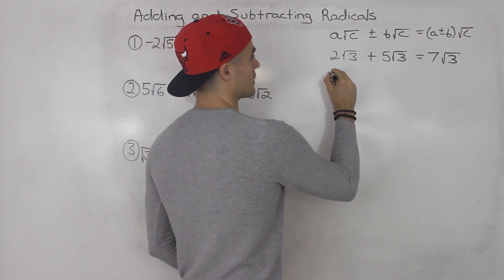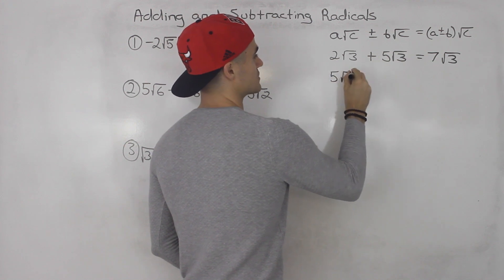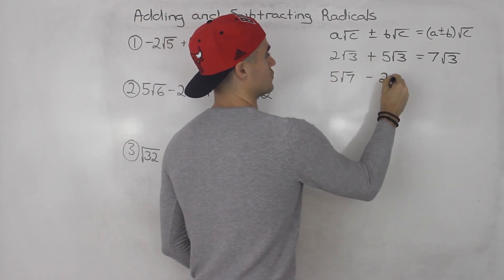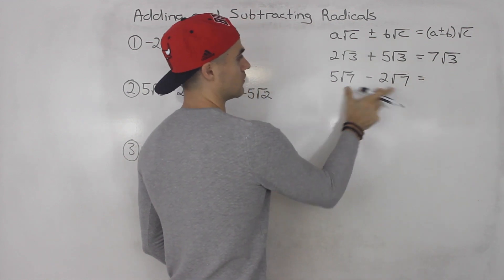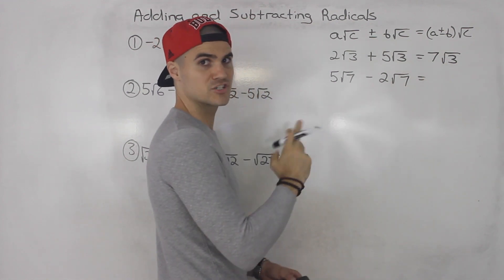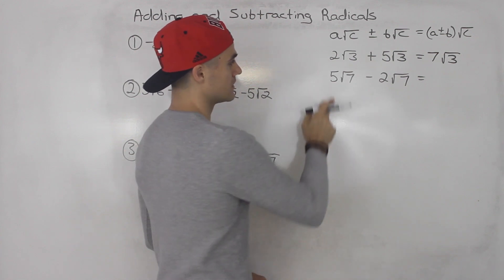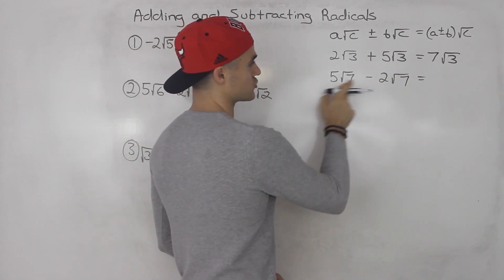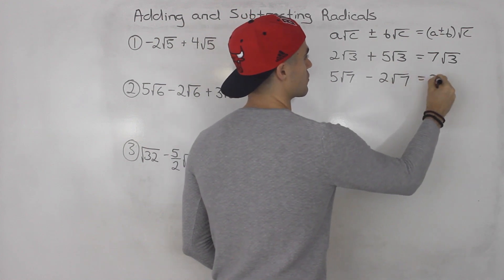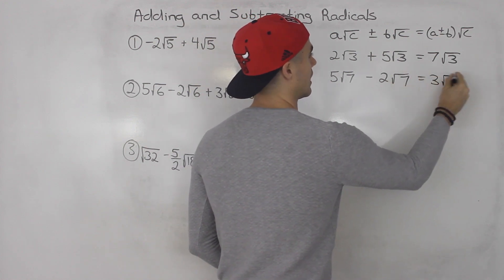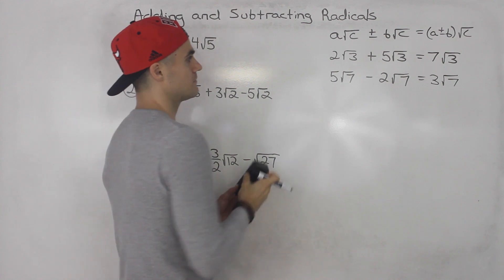Or let's say we have 5 root 7 minus 2 root 7. Same radicals, so they're like like terms — that's another way to think about this. We subtract the coefficients in front: 5 minus 2 gives us 3, and this would be root 7.